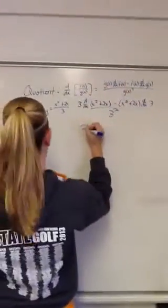When you simplify all that out, you will get 2x plus 2 over 3. There is your product and quotient.